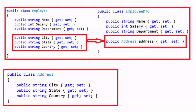In this video we are learning about how to copy the data from primitive type properties to complex type properties. For example, in this slide you can see that we have taken two classes: the Employee class and the EmployeeDTO class. We are copying data from Employee to EmployeeDTO. The Employee class has primitive type properties only, but the EmployeeDTO class has both primitive and complex type properties. The primitive type properties are name, salary, and department, and the complex type property is address.